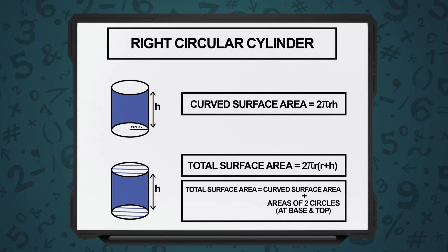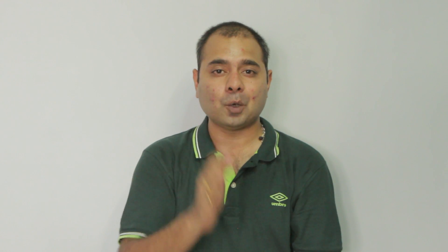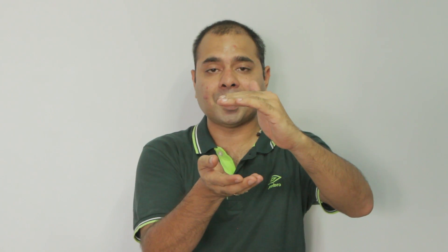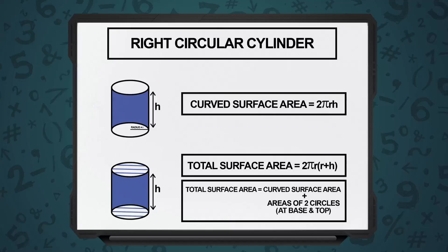The total surface area of a right circular cylinder is 2 pi r into bracket r plus h. When it comes to the total surface area of a right circular cylinder, we take the curved surface area, that is 2 pi r h, plus the area of the circle below and the area of the circle on top, pi r square plus pi r square is 2 pi r square. Therefore, the total surface area becomes 2 pi r into bracket r plus h.